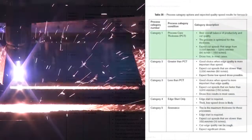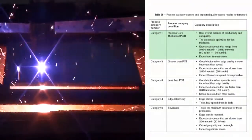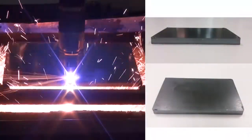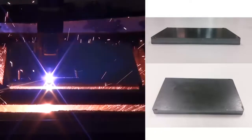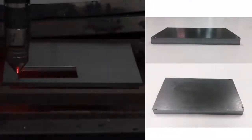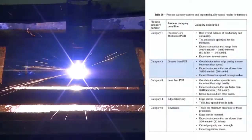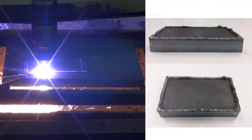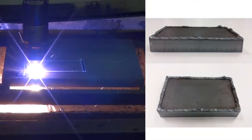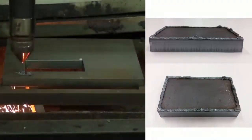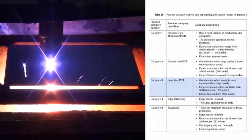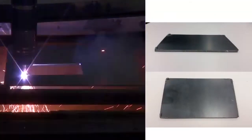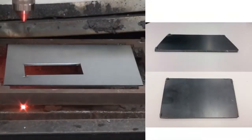When cutting mild steel, category 1 represents an optimized thickness, or PCT, for that cut process with the overall best balance of cut quality and cut speed. Category 2 represents thickness greater than PCT and is a good choice when edge quality is more important than speed. Category 3 represents thickness less than PCT and is a good choice when speed is more important than cut quality.